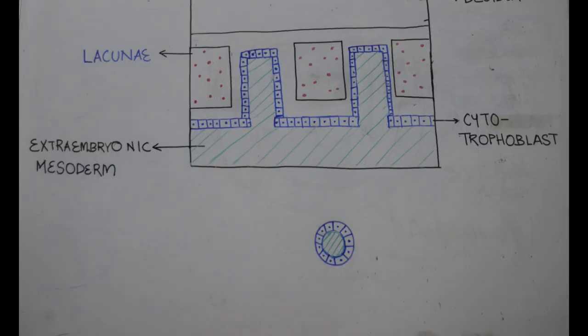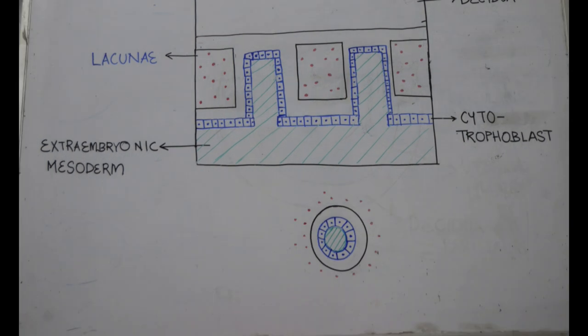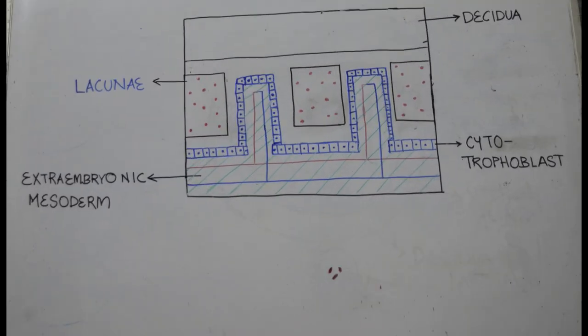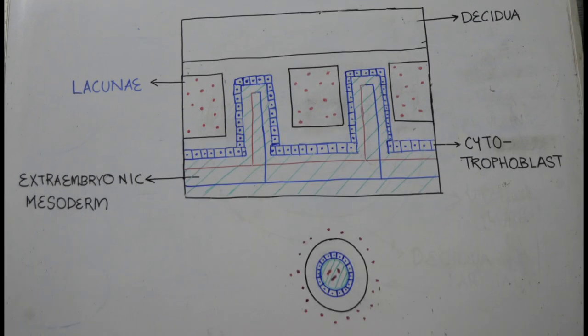Soon blood vessels can be seen in the mesoderm forming the core of each villus. With their appearance, the villus is fully formed and is called a tertiary villus. The blood vessels of the villus establish connections with the circulatory system of the embryo. Fetal blood now circulates through the villus while maternal blood circulates through the intervillus space.